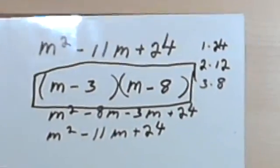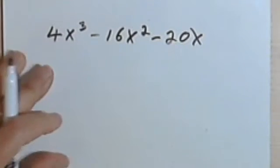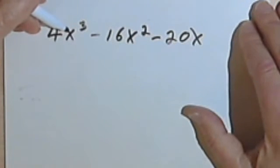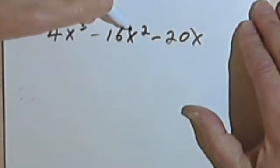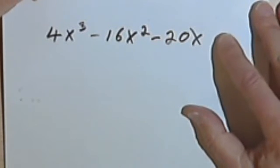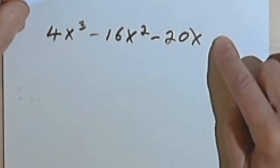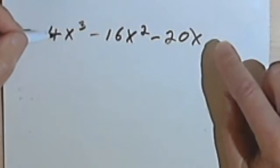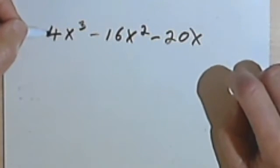Okay, here's one more. I've got 4x to the third minus 16x squared minus 20x. So hopefully you're going to pause this, work it out, and then come back.